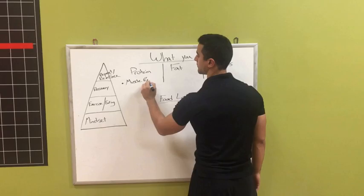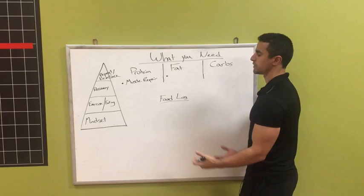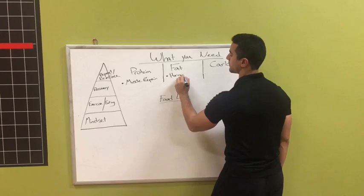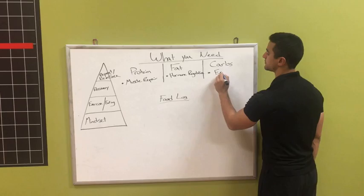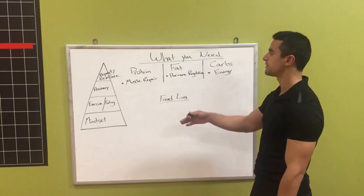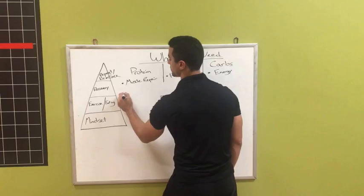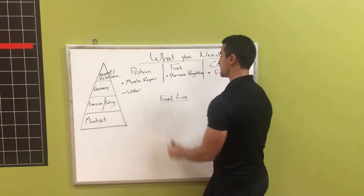Protein is going to be important, and we're just going to make this really simple. That's going to help us with muscle repair. The reason why fat is so important is because one of the big things that it does is it helps with hormone regulation. And then carbs are important, and we're just going to say that's because they're energy. So those are the three big things when it comes to what we're looking at in our food content.